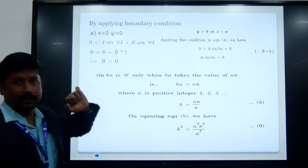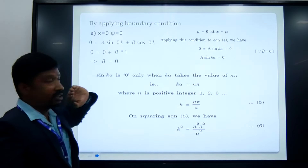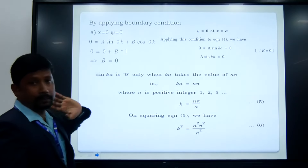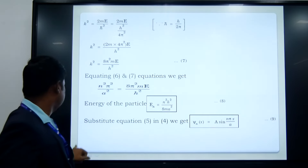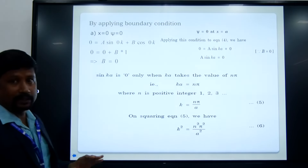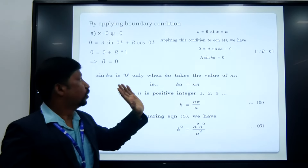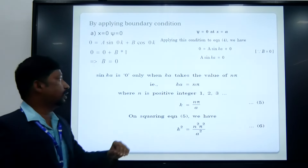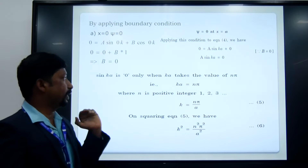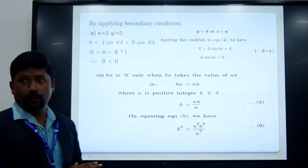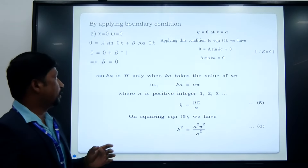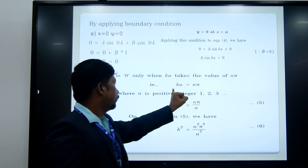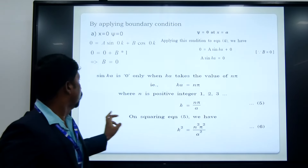From the boundary condition x equals 0 and ψ equals 0, applying in the above equation, we get A sin(0) plus B cos(0). Since sin(0) is 0, the term A is automatically neglected, and cos(0) is 1, so B must equal 0. Hence, we find that the particle is not present in the constant B term. Applying the wave function at x equals A, we get A sin(kA) equals 0. Since A is not equal to 0, we need sin(kA) to equal 0, so by taking kA equal to nπ, we get k equal to nπ/A.